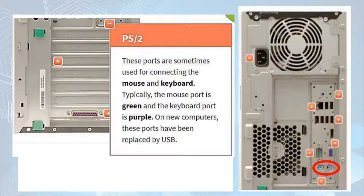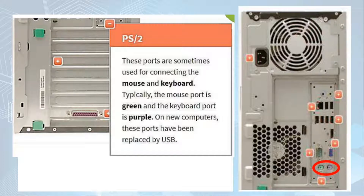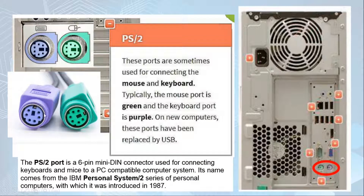Next is the PS/2 port. These ports are sometimes used for connecting the mouse and keyboard. Typically, the mouse port is green and the keyboard port is purple. On newer computers, these ports have been replaced by USB. If you visit a computer shop, check what type of connector their computer mouse and keyboard use — the old circular PS/2 type, or the newer USB cable type.